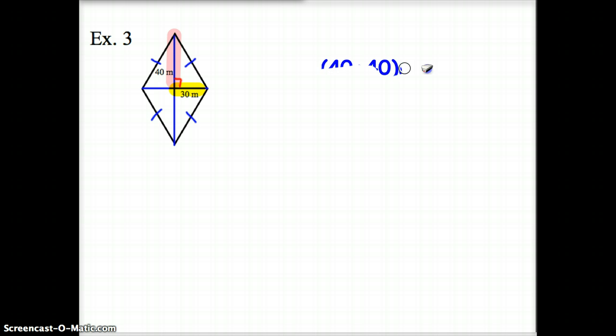For this problem, we have to get the full length of our diagonals. So this length is 40, this length is 40, this length is 30, this length is 30. So we've got 40 plus 40 times 30 plus 30, or an area of 80 times 60. And 80 times 60 is going to give me 4,800 meters squared.